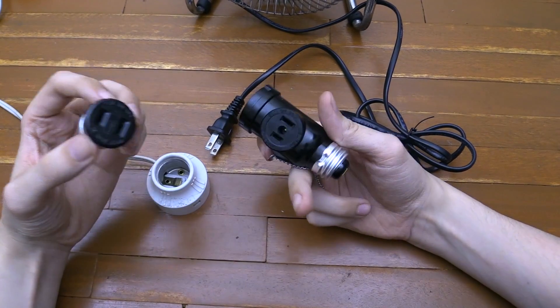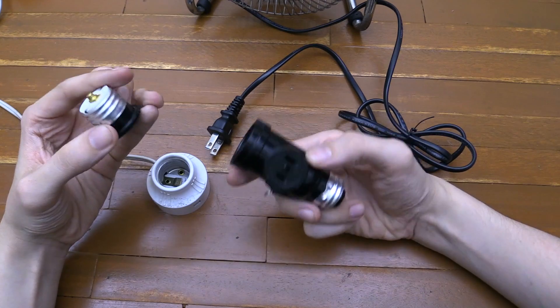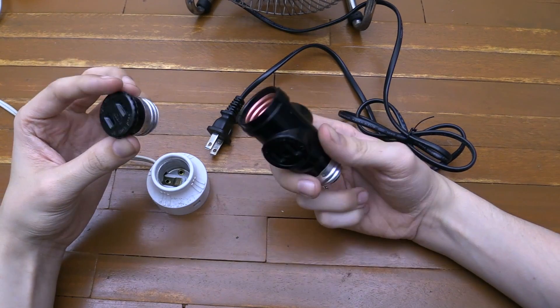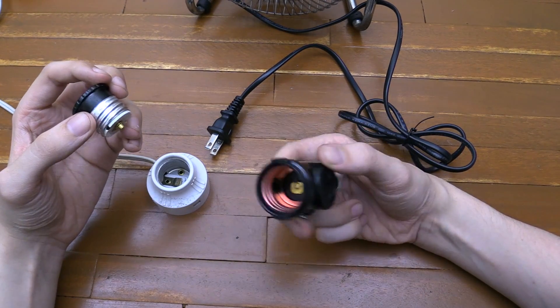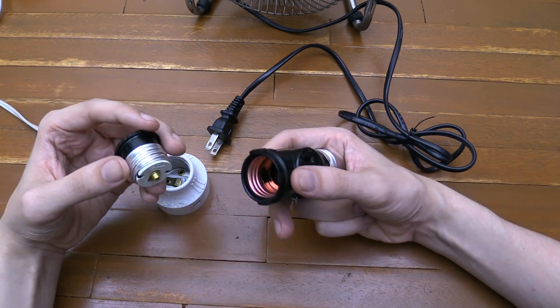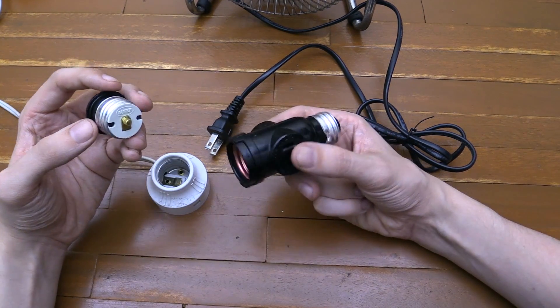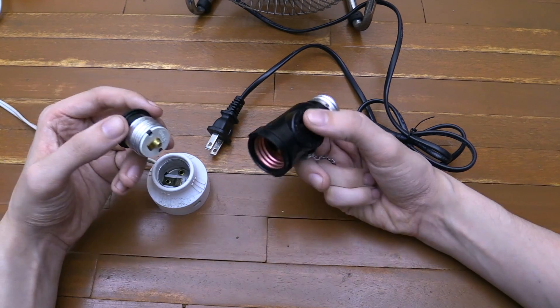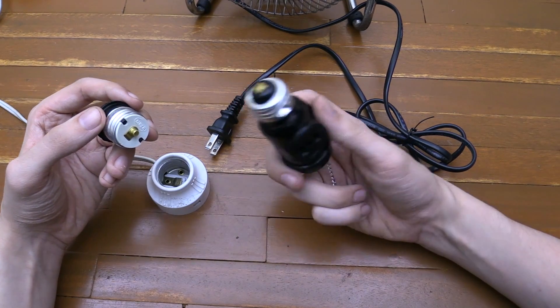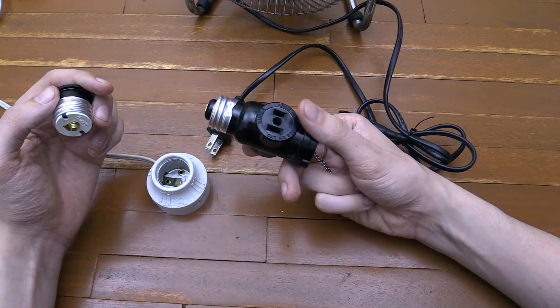Now of course a lot of people probably already know about these but some people won't so that's why I'm making this video because these can be really useful especially if you're traveling as well because sometimes you go somewhere and they don't have any sockets to plug in but they do have a side lamp or a main lamp in the middle of the room. So these can be useful to convert those to AC outlets.